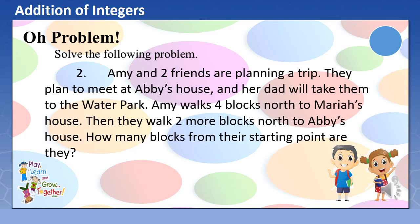For three points, solve the following problem. Ami and two friends are planning a trip. They plan to meet at Abby's house, and her dad will take them to the water park. Ami walks four blocks north to Mariah's house. Then they walk two more blocks north to Abby's house. How many blocks from their starting point are they?